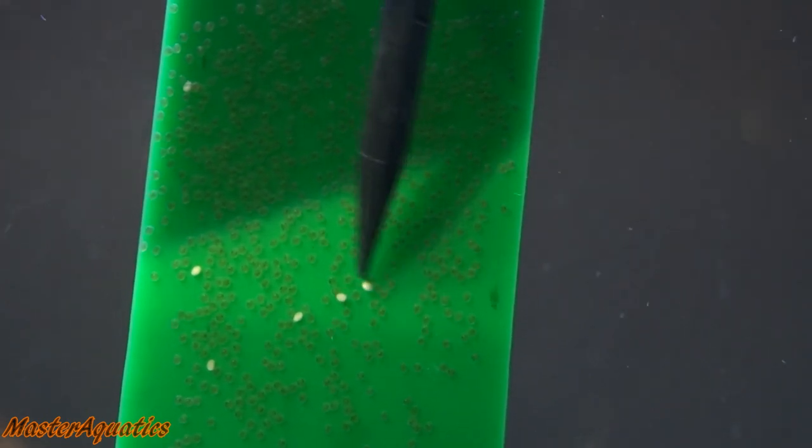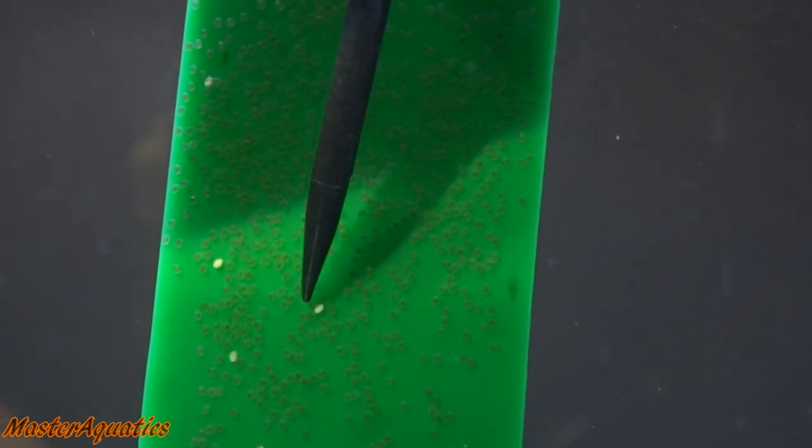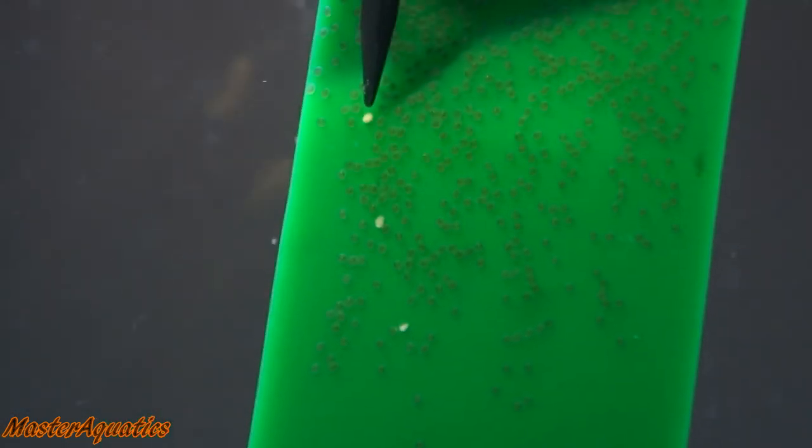The reason being why some of the eggs turn white is because either the male is not fertilizing the eggs, two, water quality is bad, three, it just happens. No matter what, you're going to get a few white eggs.